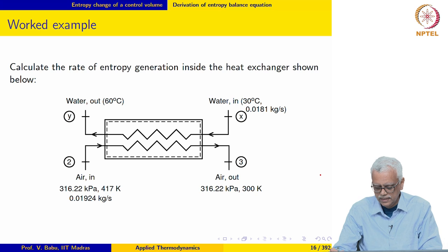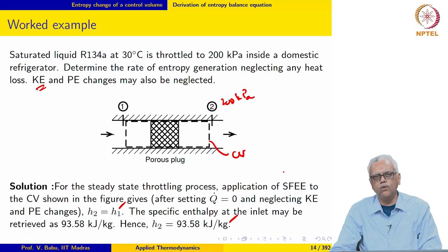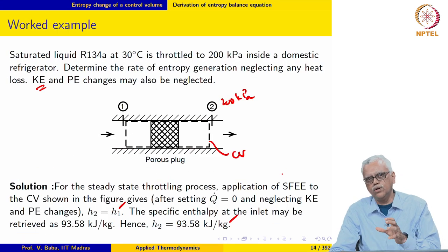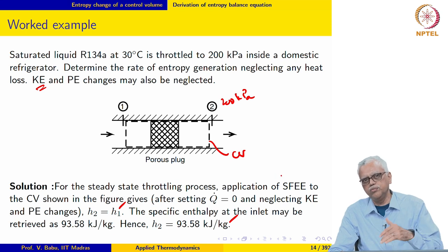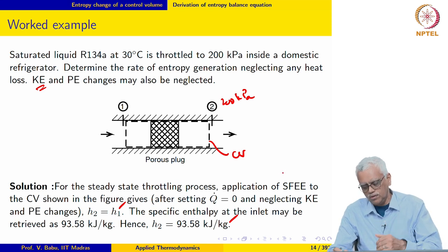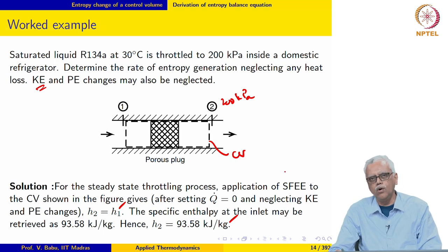As the fluid flows through these small holes it is throttled, which is a highly irreversible process. The entropy generation is due to throttling of the fluid through these small pores.